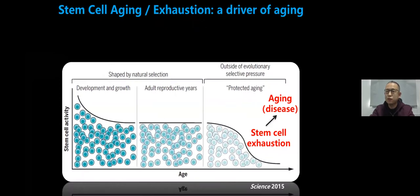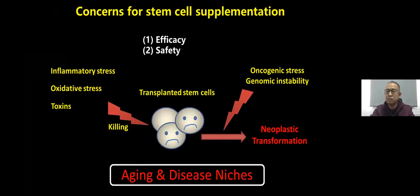The next scientific question is: because stem cell decay occurs during aging, can stem cell supplements be used to treat aging-related diseases? We need to pay close attention to two issues regarding stem cell therapy: efficacy and safety. Especially when introduced into aging microenvironments, stem cells are challenged by different stress factors. Additionally, cancer-promoting stress and genomic instability may also lead to malignant transformation of these cells. Therefore, we hope to achieve enhanced efficacy and safety through gene editing.